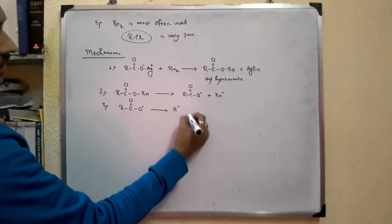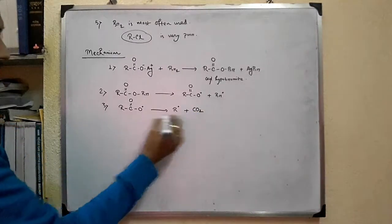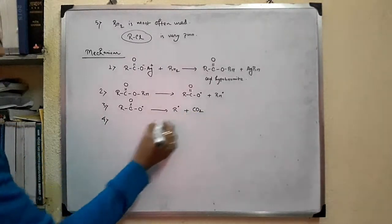So, as CO2 is removed, we get the alkyl free radical. In the last step,